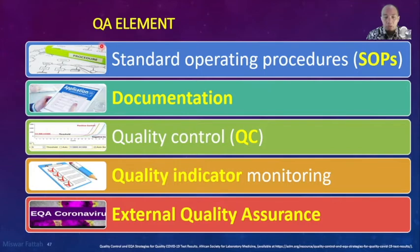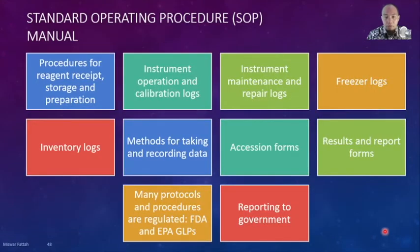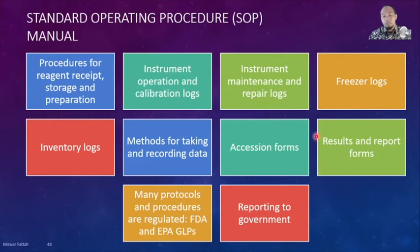Quality assurance elements include standard operating procedures, documentation, quality control, quality indicator monitoring, and external quality assurance. Standard operating procedures should include a manual of procedures for reagent receipt, storage and preparation, instrument operation and calibration log, instrument maintenance and repair log, freezer log, inventory log, methods for taking and recording data, association forms, and result and report forms. Many protocols and procedures are regulated by FDA, and we need to report to government.